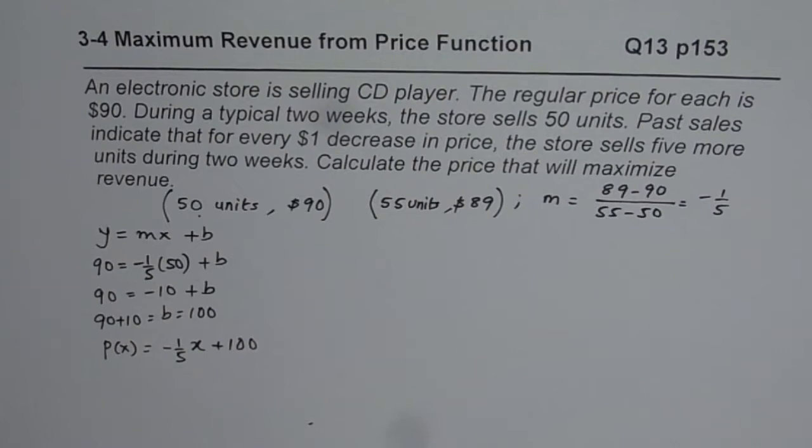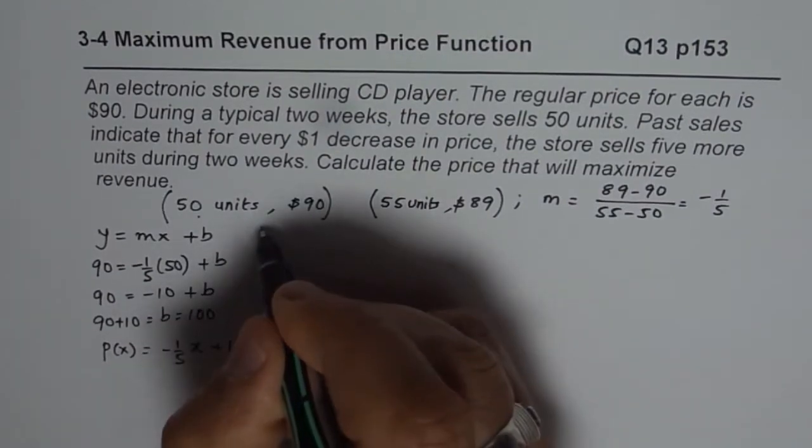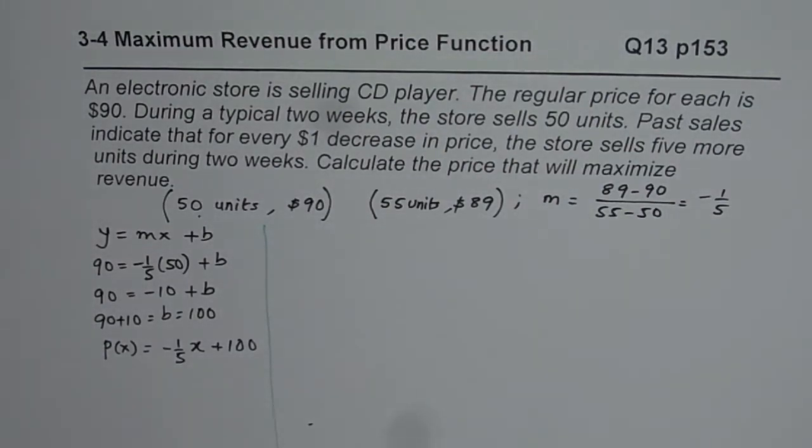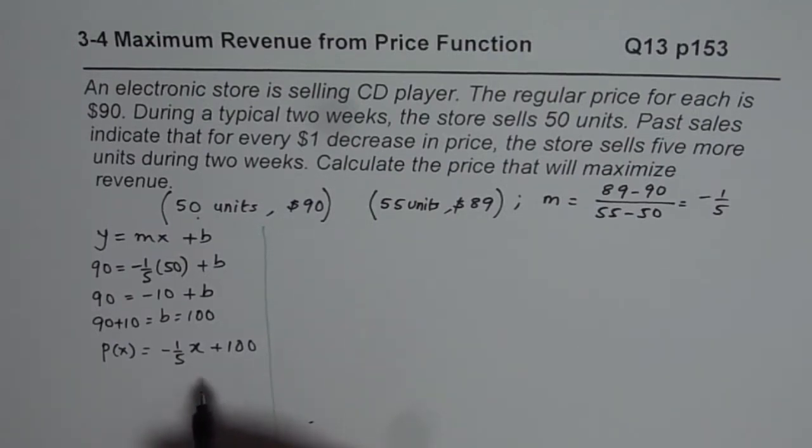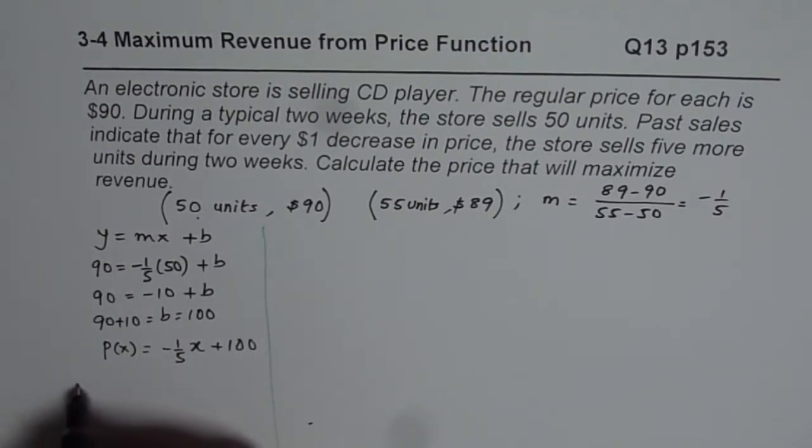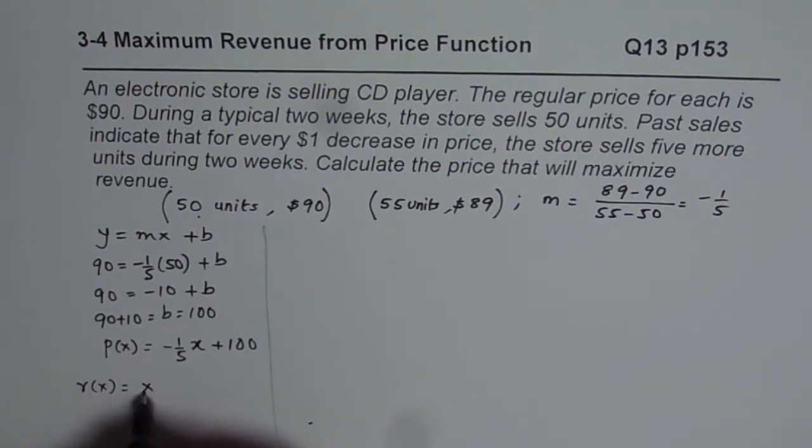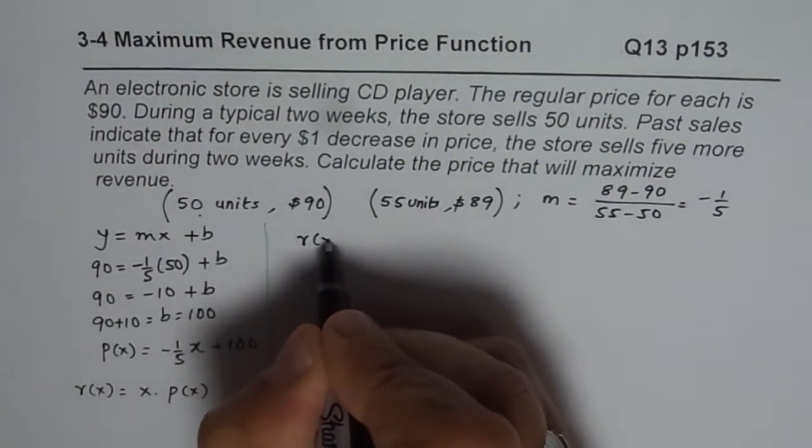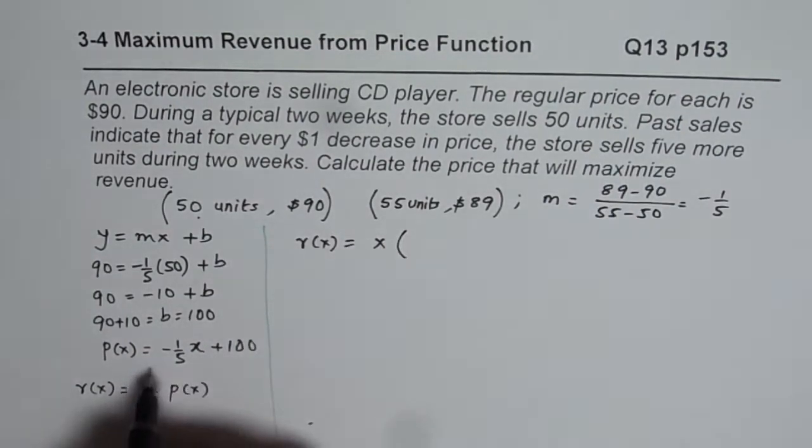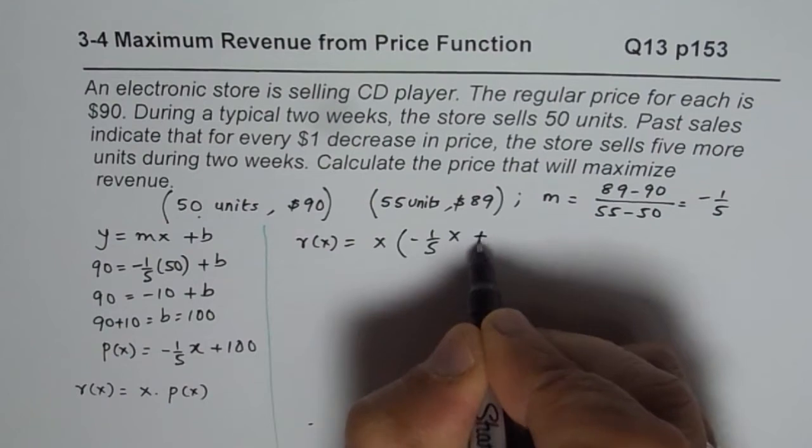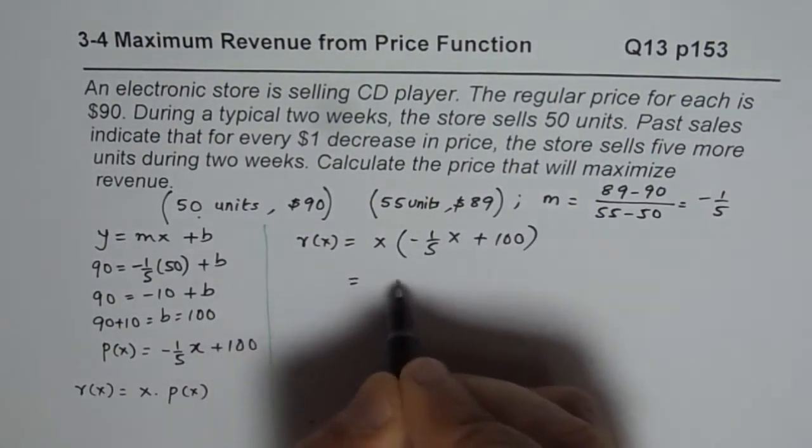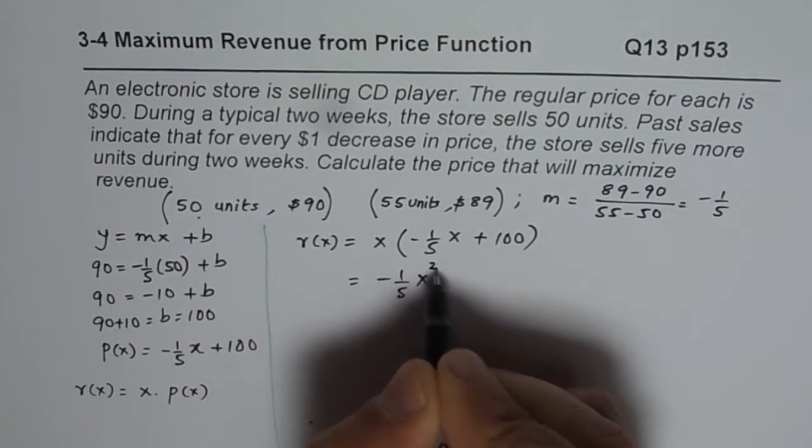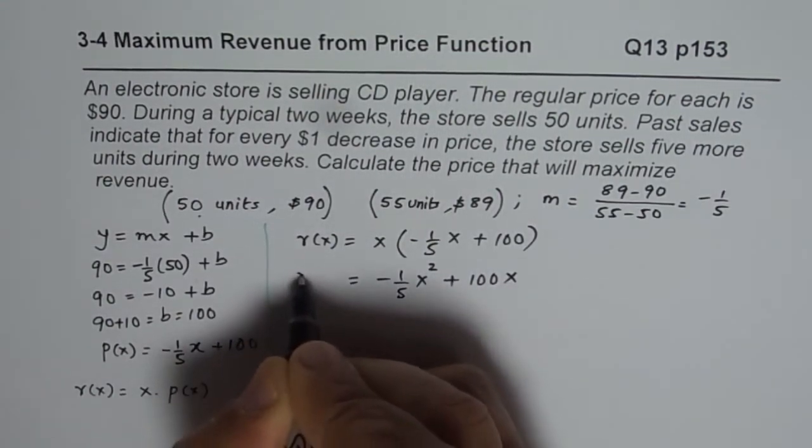So I hope these steps which we have taken to find price function are absolutely clear. Now these are common steps which you have to take for all kinds of questions relating to cost revenue and profit. So that is the first thing. Now what is revenue? Now as you know that is the price, so revenue R of x will be equals to x times the price function. So that is revenue. Now let us calculate the revenue function. So revenue function R of x is x times price function, which is minus 1 over 5x plus 100. So when you multiply, you get minus 1 over 5x square plus 100x. So that is the revenue function.